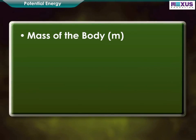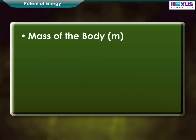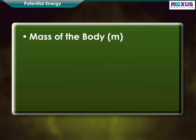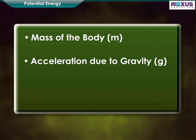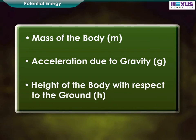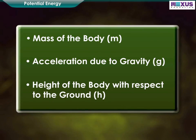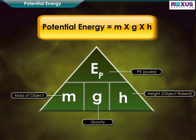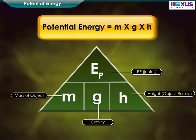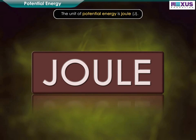Potential energy of a body depends on the mass of the body, acceleration due to gravity, and the height of the body with respect to the ground. So, potential energy is the product of mass of the body, acceleration due to gravity, and height of the body with respect to the ground. The unit of potential energy is joule.